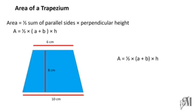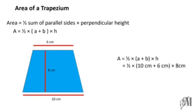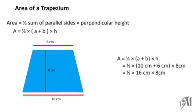So half into (a + b) into h is the equation. Substituting a as 10 and b as 6, once the bracket is simplified you get 10 plus 6 is 16. We can then cancel the 2 with 16 to give 8, and so 8 into 8 centimeters gives 64 square centimeters.